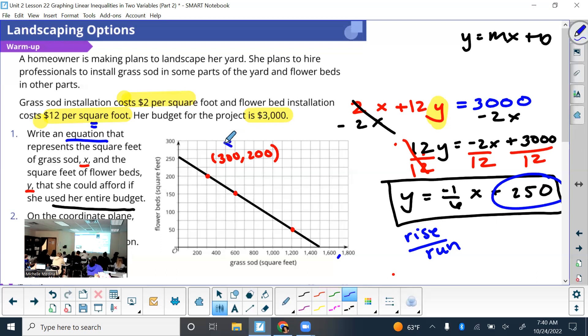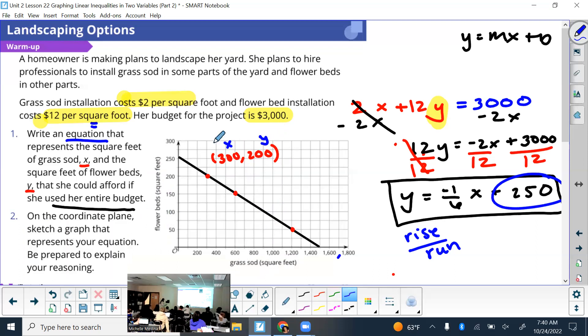Good. x is 300, y is 200. What did x represent? Square feet of grass sod. What did y represent? Flower beds. Good. So that's an example of something that she could do and use her entire budget. Or she could do 600 and 150, or like we said, 1,200 of the grass and 50 of the flower beds. All of these on the line are solutions. Good.